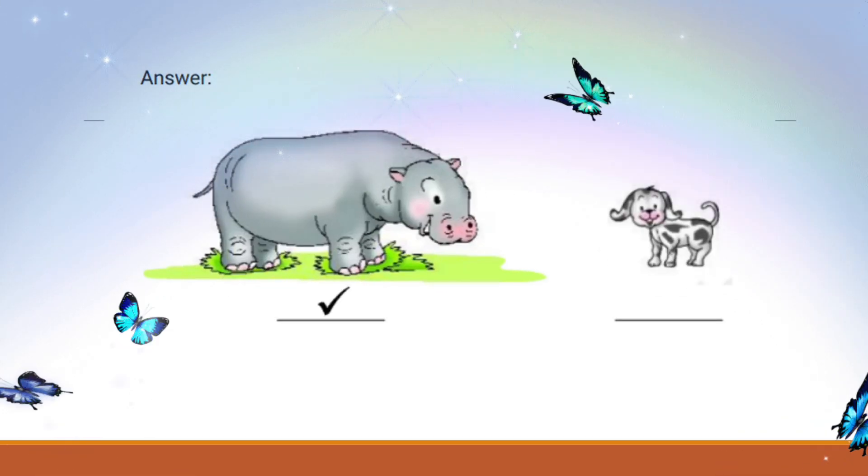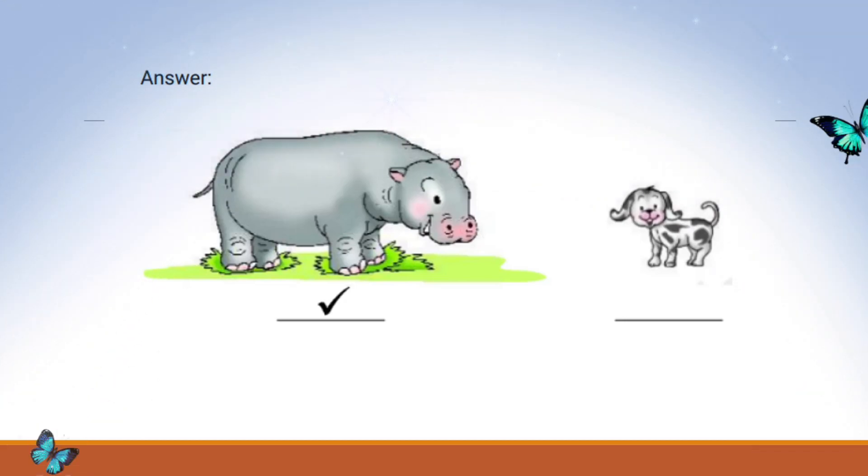This is a hippo. Hippos are one of the biggest animals that live in the water. They are huge and strong, and this little cutie is a puppy. Puppies are small and usually fit into our arms.